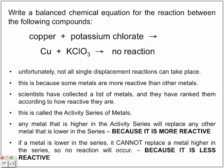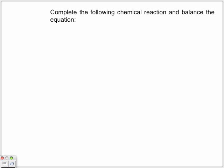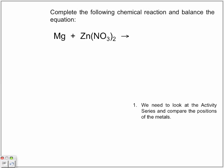If a metal is lower in the series, it cannot replace a metal higher in the series, so no reaction will occur because it is less reactive. Let's look at an example: complete and balance the following chemical reaction — magnesium and zinc nitrate. We've identified it's a single displacement reaction. How do you know? Look for a lonely atom — look for a lonely metal or a lonely non-metal.